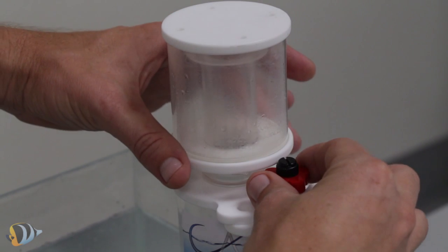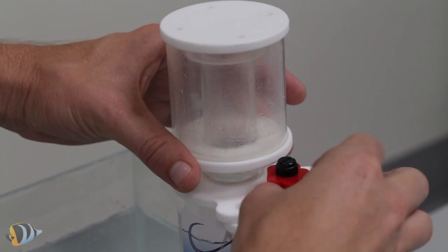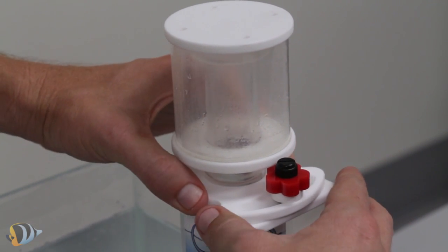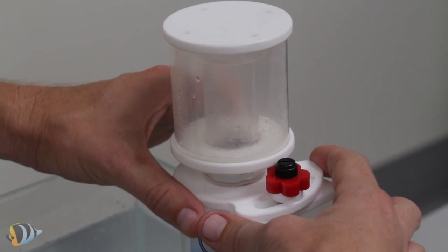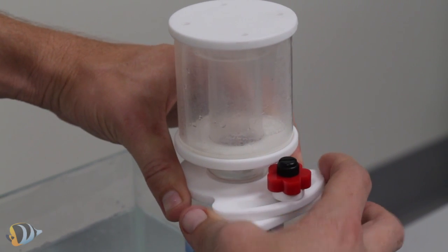Upon hanging the skimmer onto your aquarium, you'll want to open the drains. You can loosen the locking knob and turn the skimmer until the holes on the bottom of the skimmer body are aligned.